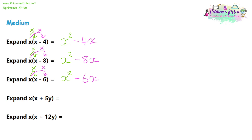Question four has a little change — x(x + 5y). x times x gives x squared. Then it's x times 5y. We can break this into steps: x times 5 gives 5x, and the extra letter y just gets popped on the end, giving 5xy. We don't know what y is, so since we don't know it, just pop it on the end. If we ever find out what x and y are, we can multiply all those numbers together.